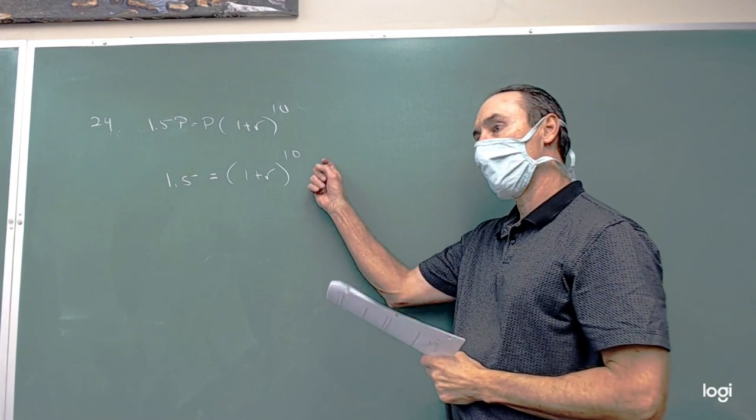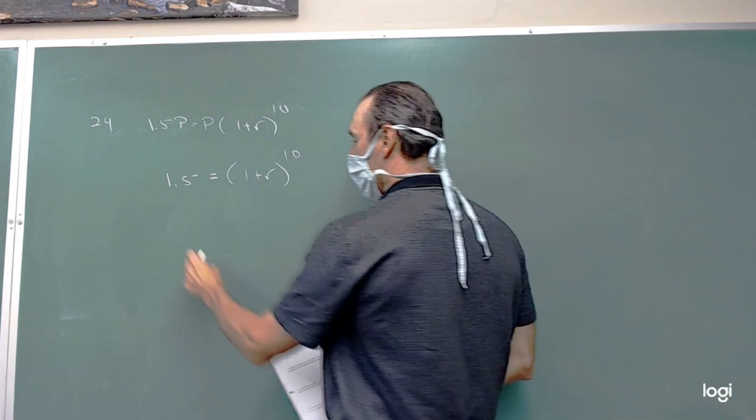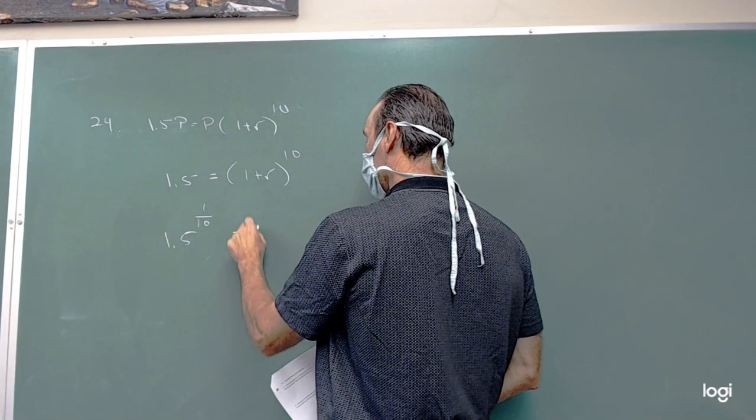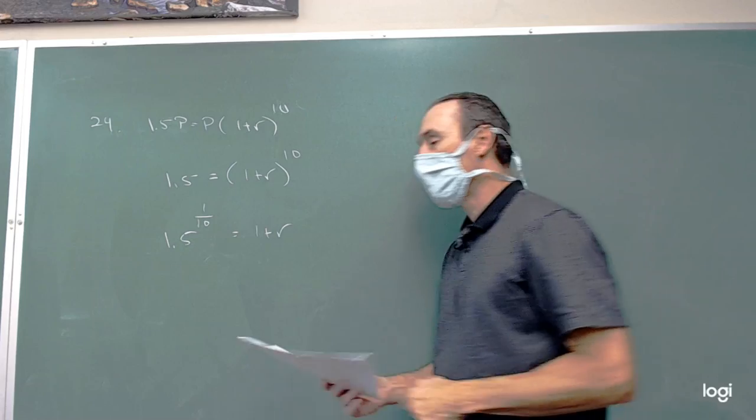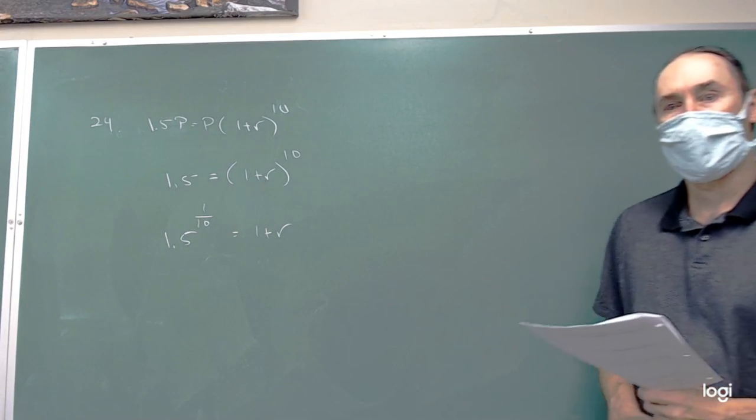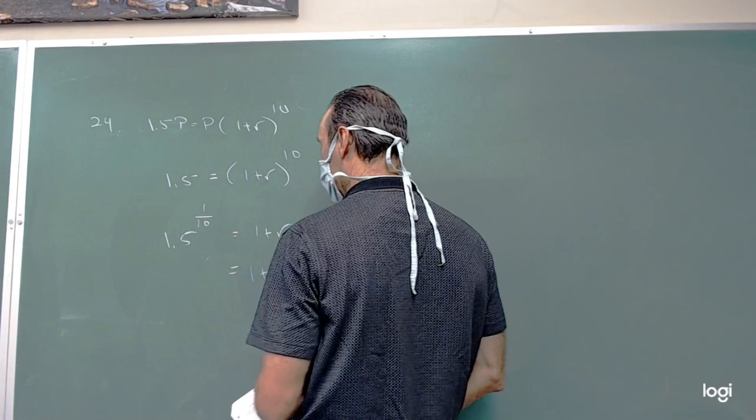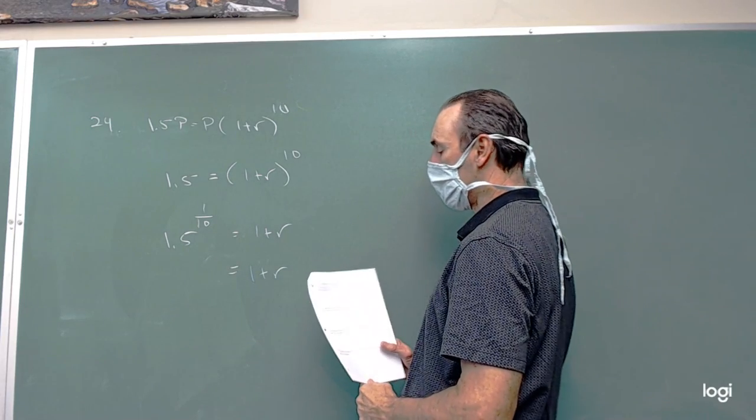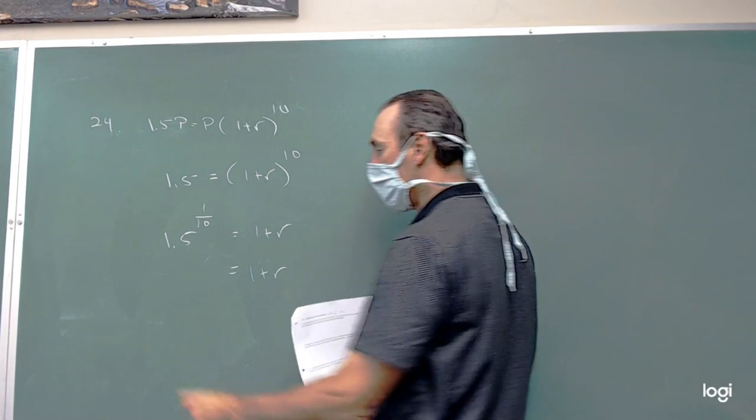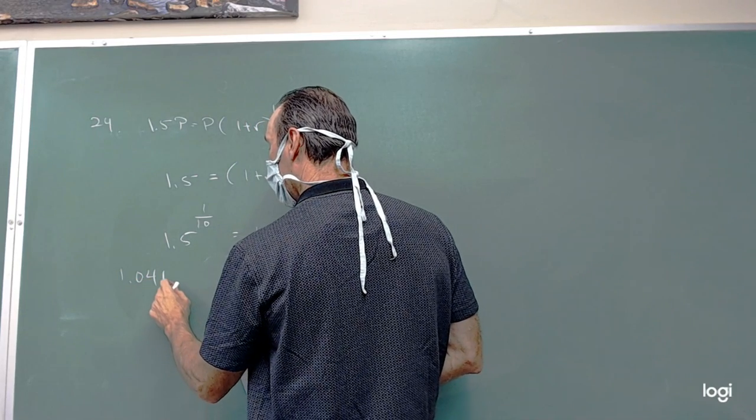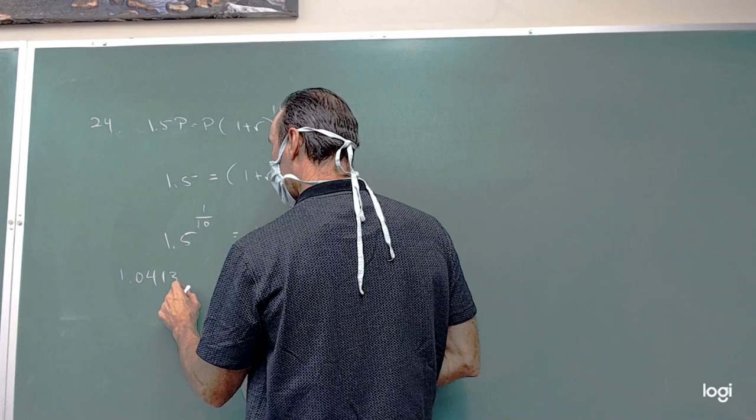To solve this for R, we'll get rid of the 10 by either doing the 10th root, or we get fewer keystrokes if you just do to the 1 tenth power. Katrina, do you want to tell me what you get when you get to there? 1.04138.